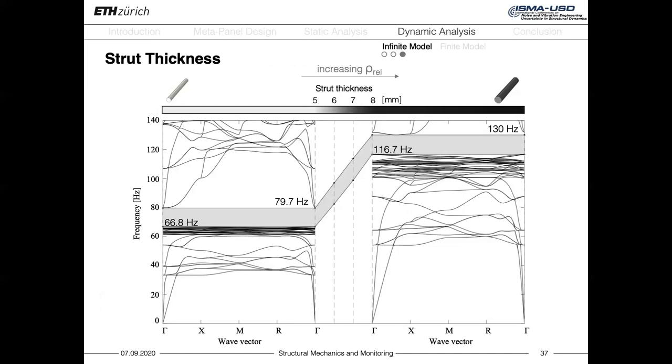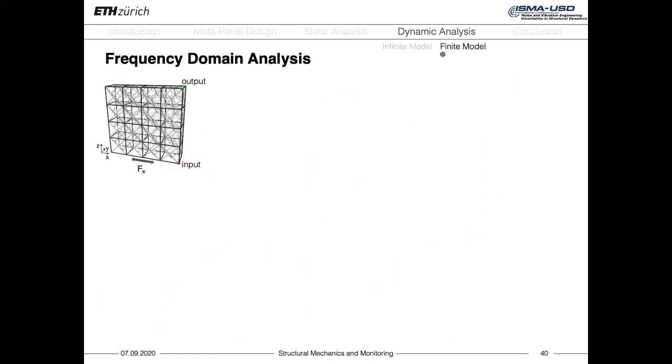Up to here, we have shown only the dynamic behavior of an infinite lattice. Now, I would like to move towards a finite model in order to get closer to the reality. For this reason, we build a panel made initially by four cells in the horizontal and vertical directions. Then, we excite it with an imposed displacement at its bottom, acting in the horizontal direction. Then, we measure the signal at the top and at the bottom of the panel, respectively in the green and red points, and we compute the transmission of the excitation within the structure.